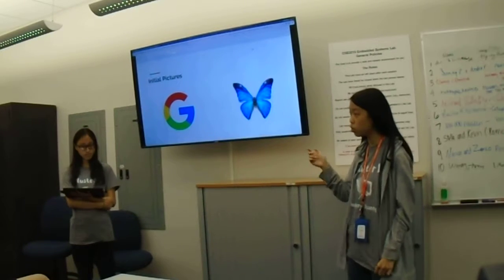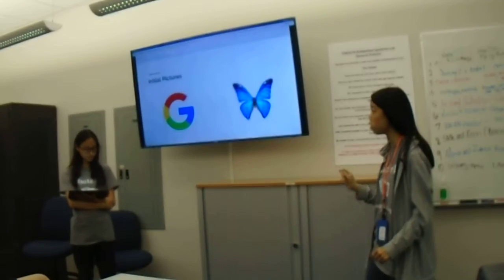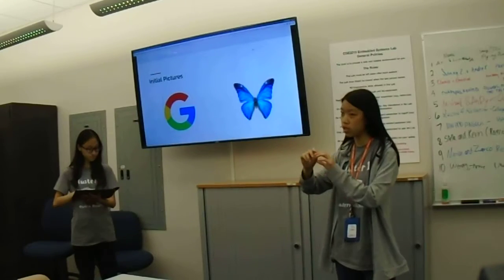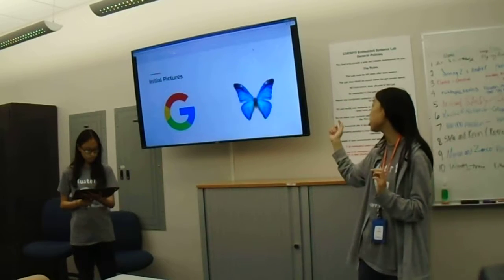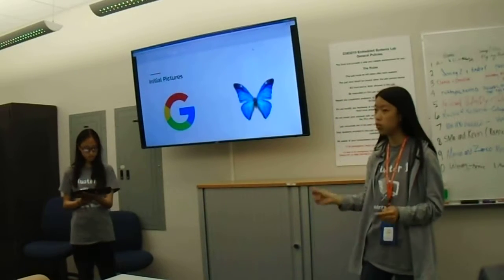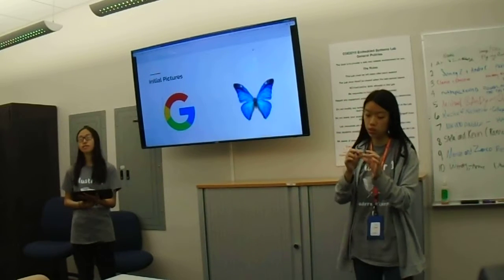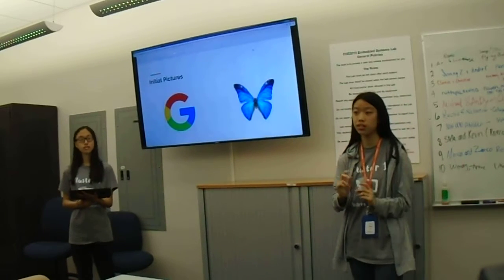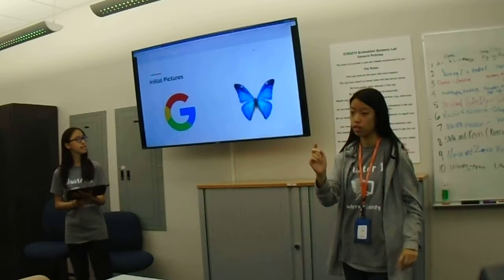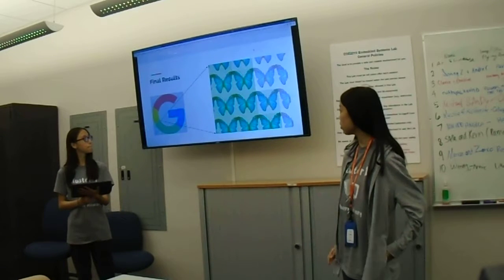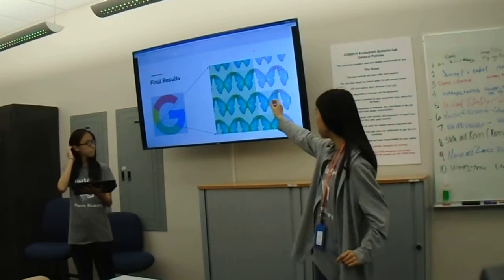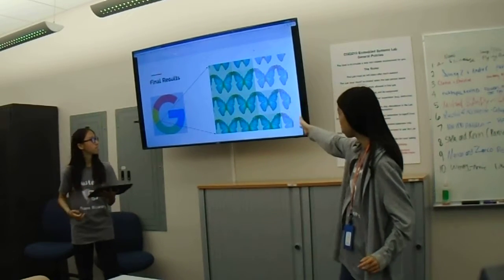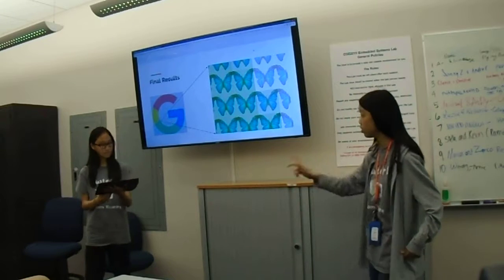These were the pictures we started off with. The one on the right is the one that we used as the final picture, and the butterfly on the left is the one we're using as the individual tiles. Our final result was a little bit like this, and we zoomed in so you would see that.